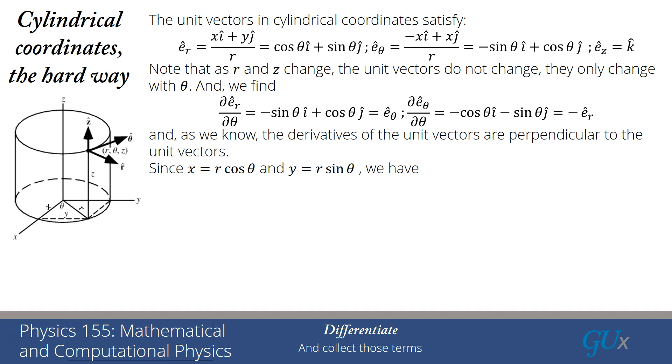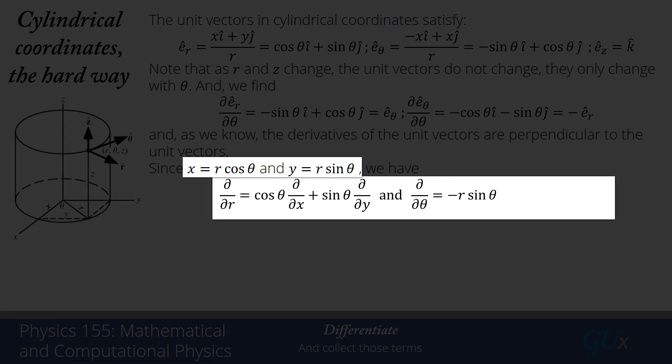Because x equals r cos theta and y equals r sin theta, we use the chain rule: d/dr equals cos theta d/dx plus sin theta d/dy. Similarly, d/d_theta equals minus r sin theta d/dx plus r cos theta d/dy. This is just an application of the chain rule using multivariable functions.